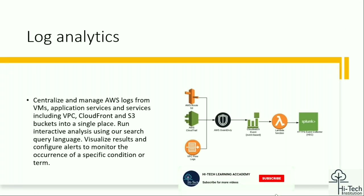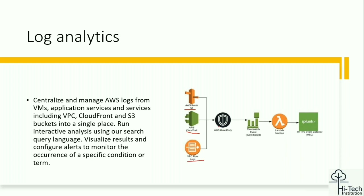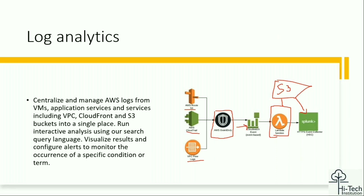Coming to log analytics, AWS itself has CloudWatch log mechanism and CloudTrail log mechanism. From AWS Route 53, CloudTrail, and VPC flow logs — everything is monitored by CloudWatch and GuardDuty. The CloudWatch events, along with all these inputs, get processed in a Lambda function which puts the data into an S3 bucket. From there it's handed over to log analytics tools — Splunk is available, the ELK stack is available, and many others.